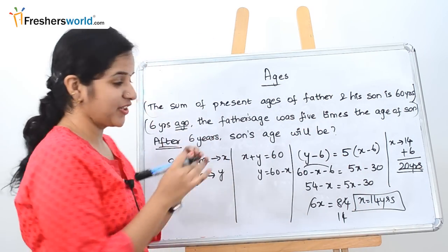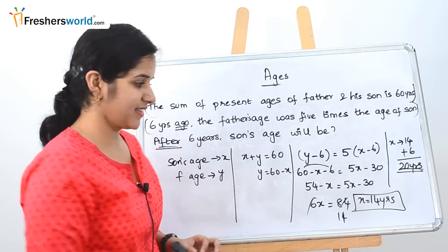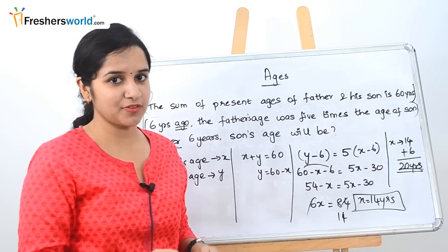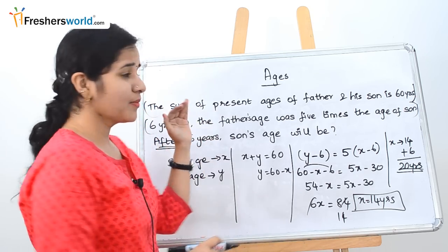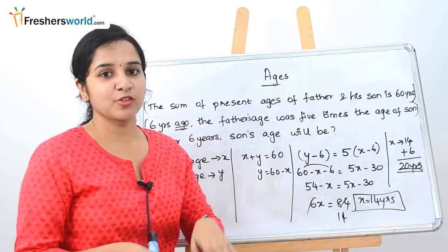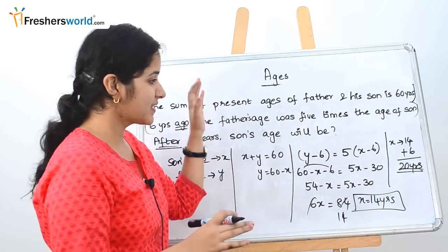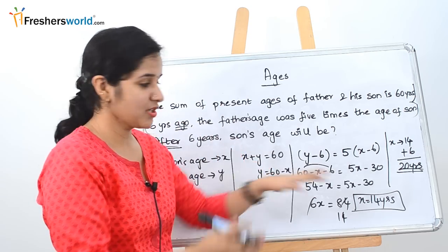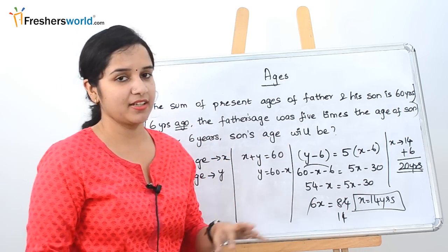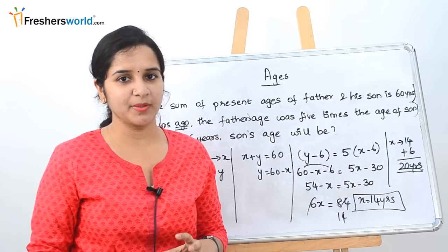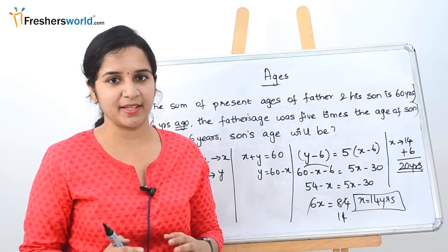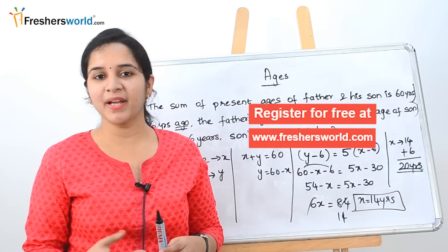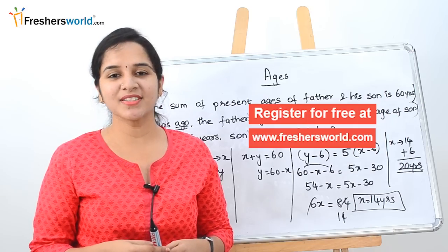As I always say, read your question 2–3 times to understand exactly what is being asked. As with the previous sum, 14 will also be an option, so make sure you check whether they are asking for the present age or something else. Instead of father and son, they may use mother and son or brother and sister — the method remains the same: segregate, find the equations, substitute, and find the answer pertaining to what the question asks. In the future videos, we will solve much tougher age problems. If you are looking for a job, register at freshersworld.com, like this video, and subscribe to our channel. Thank you.